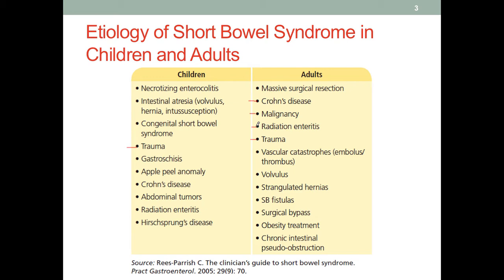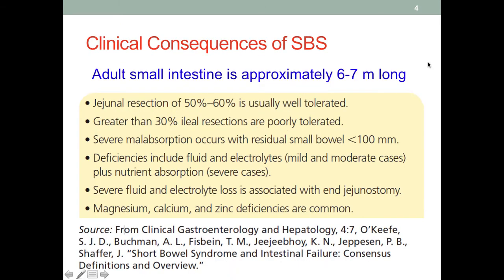This slide lists very common etiologies for children and adults who may have short bowel syndrome. There are clinical consequences when people do have short bowel syndrome and no longer have a small intestine that is six to seven meters long. When the jejunal resection is about 50% to 60%, patients can usually still tolerate it well, meaning the patient can still have relatively normal digestion and absorption. If we have ileal resection and lose more than 30% of the ileum, then this is poorly tolerated.